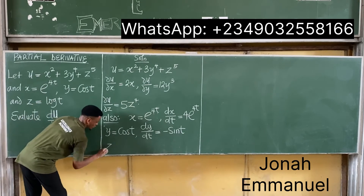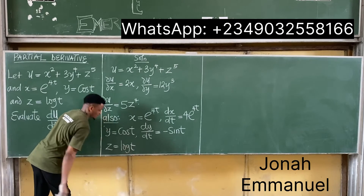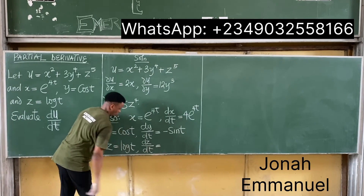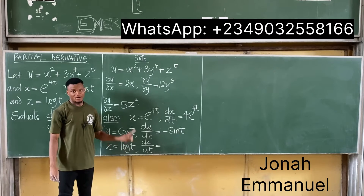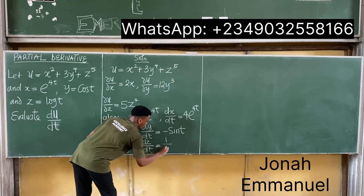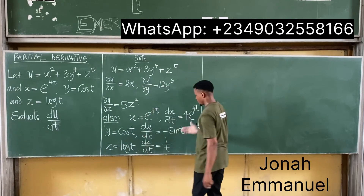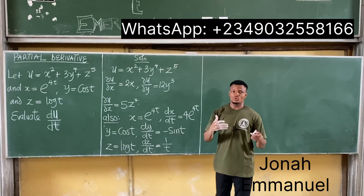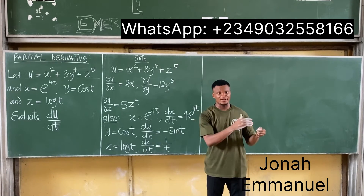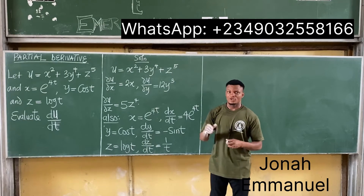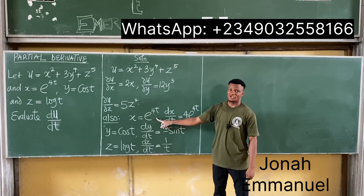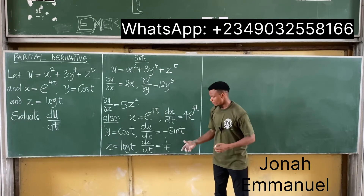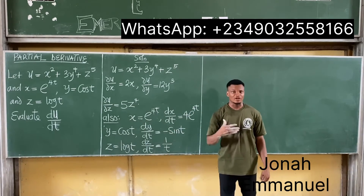Finally, given that z equals log(t), differentiating gives dz/dt equals 1/t. The differentiation rules for exponential, trigonometric, and logarithmic functions have been covered in previous classes — check the differentiation playlist on this channel.